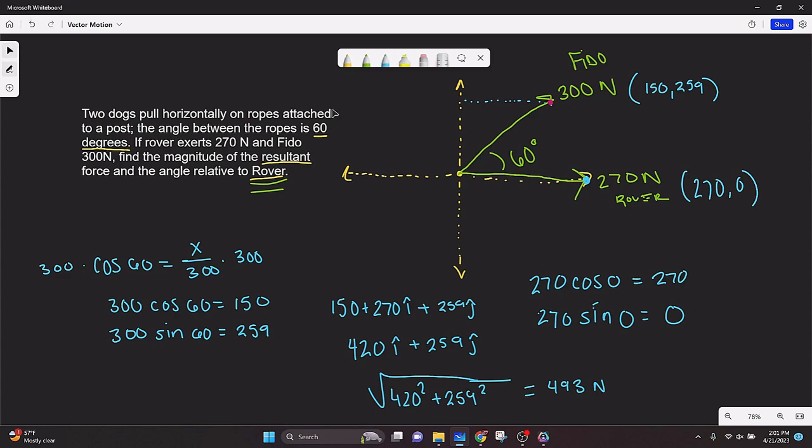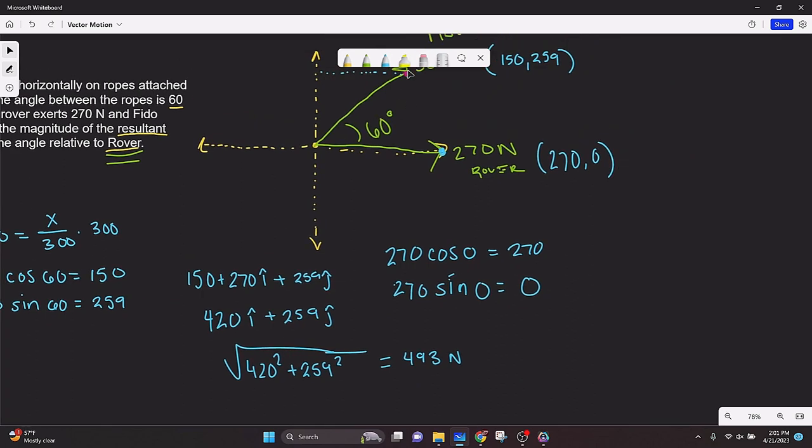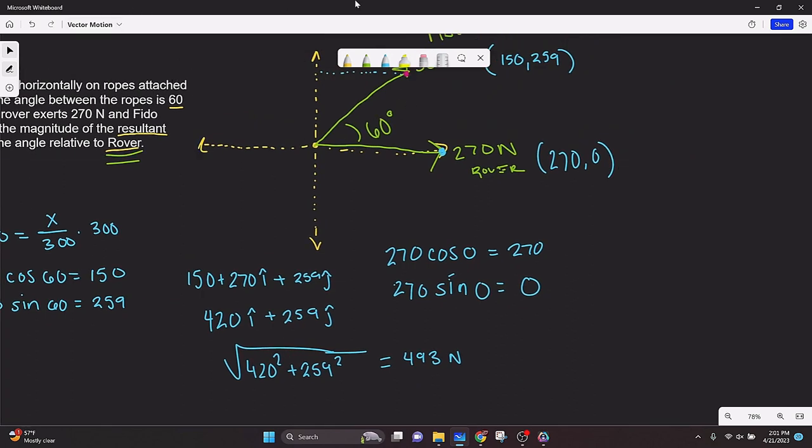And then we want to know the angle of this new vector so we can plot it and imagine what it would look like in real life. And that is going to be arc tan of 259 over 420. And that is roughly 32 degrees. So our new vector is going to be longer than the others, say right there, 493 newtons. And the angle is 32 degrees relative to Rover.